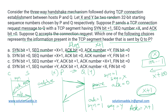The FIN bit will be 0 because the connection is being established, not terminated. So Q's response has: ACK bit = 1, SYN bit = 1, sequence number = Y, ACK number = X+1, FIN bit = 0. Option B is incorrect because its SYN bit is 0. Option A is incorrect because the ACK bit is 0 — Q must acknowledge P's packet. Option D is incorrect because the ACK number is X, but it must be X+1 since the SYN packet consumes one sequence number. That leaves option C as the correct answer.